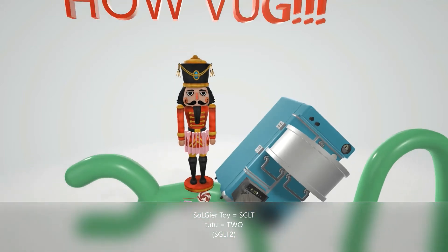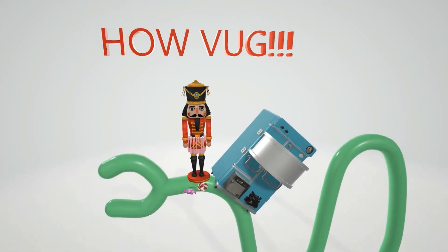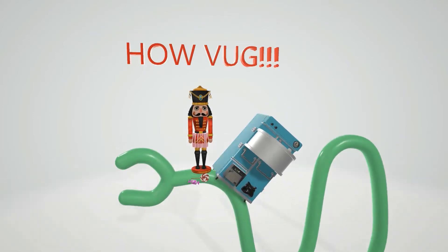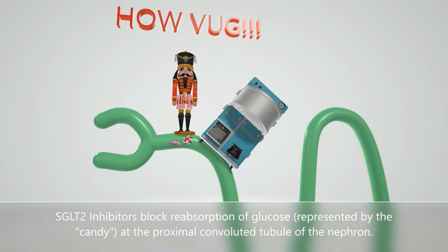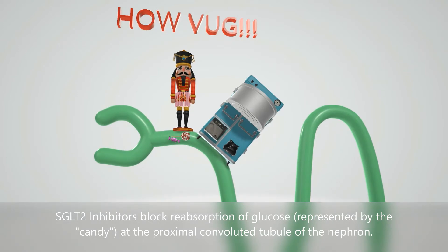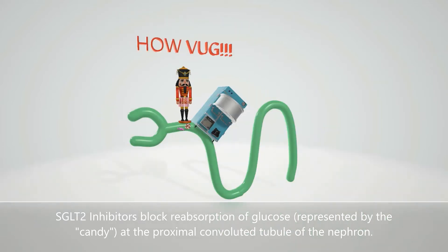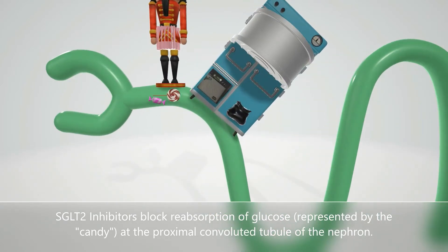The soldier is standing on a proximal convoluted tubule of the nephron, because that's where SGLT2 inhibitors work — at the proximal convoluted tubule, where they block reabsorption of glucose. The soldier is blocking the reuptake of the candy, which represents glucose.